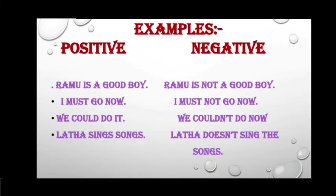Let us see some examples of positive and negative declarative sentences. Ramu is a good boy. Ramu is not a good boy. I must go now. I must not go now. We could do it. We couldn't do it. Latha sings songs. Latha doesn't sing the songs.